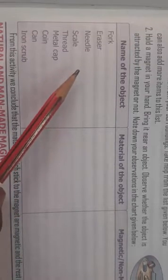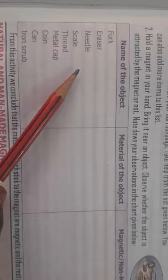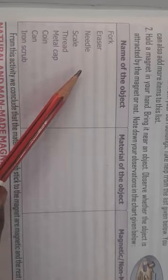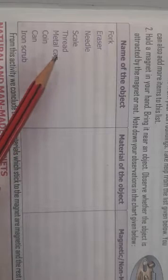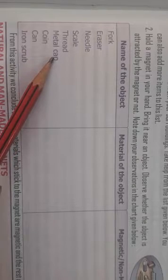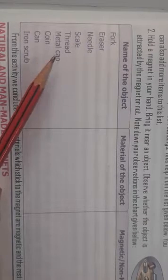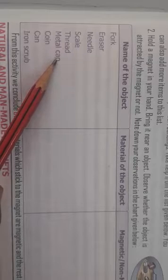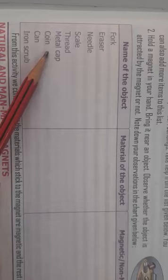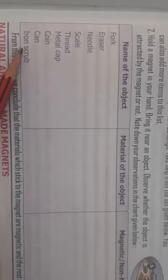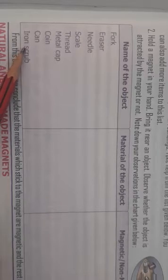A needle — since it is made of iron — is magnetic. Then scale and thread, all these are non-magnetic. A metal cap is magnetic if it is made of iron, cobalt, or nickel. A coin also gets attracted. Iron scrubs get attracted. So all these are magnetic materials.